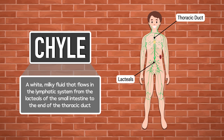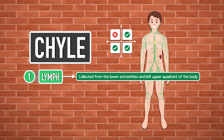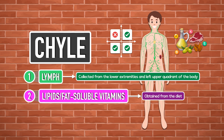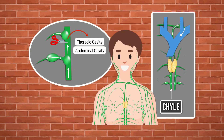Chyle is a white milky fluid that flows in the lymphatic system from the lacteals of the small intestine to the end of the thoracic duct. It consists of lymph collected from the lower extremities and left upper quadrant of the body, and lipids and fat-soluble vitamins obtained from the diet. Under normal circumstances, chyle passes through the thoracic duct and into the bloodstream. However, if any of the lymphatic vessels it flows through are damaged, a chyle leak can occur and it can accumulate in the thoracic or abdominal cavity.